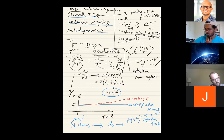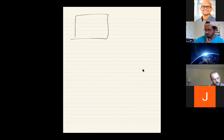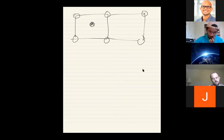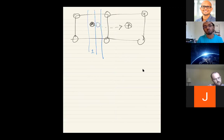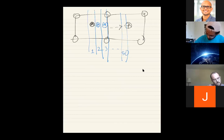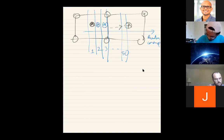Umbrella sampling is yet another method where you try to force the system to stay in different locations. Let's say you have a crystal with an interstitial atom and you want to know the pathway it takes to move to another location. In umbrella sampling, you prepare many copies of the system — one where the interstitial is at position one, another at position two, and so on — creating perhaps 50 copies along the reaction coordinate. Then you force the system to stay there by applying a biasing force shaped like an umbrella — that's where the name comes from.